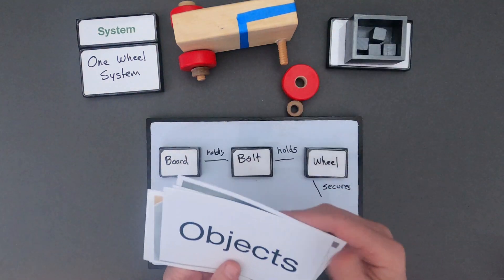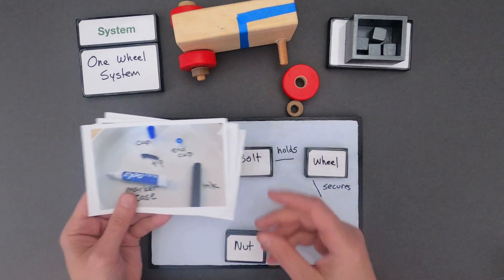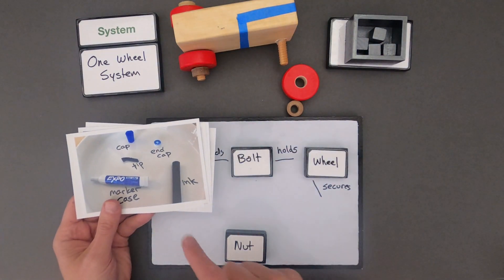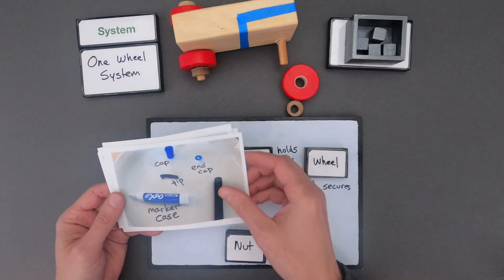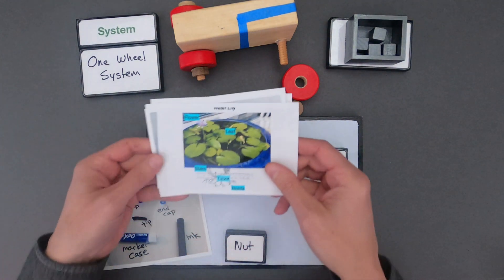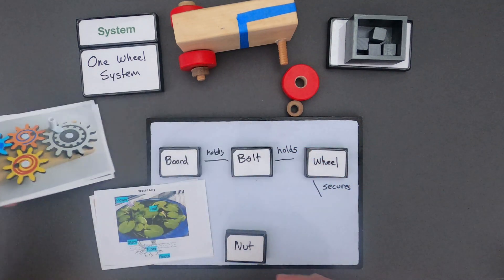What I'd like you to do next is go look at a couple of other objects. I've got Google slide decks below the video. You could look at a dry erase marker that I've taken apart and figure out how does that system work together. Or you could look at a living system like a water lily and how all the parts work together.